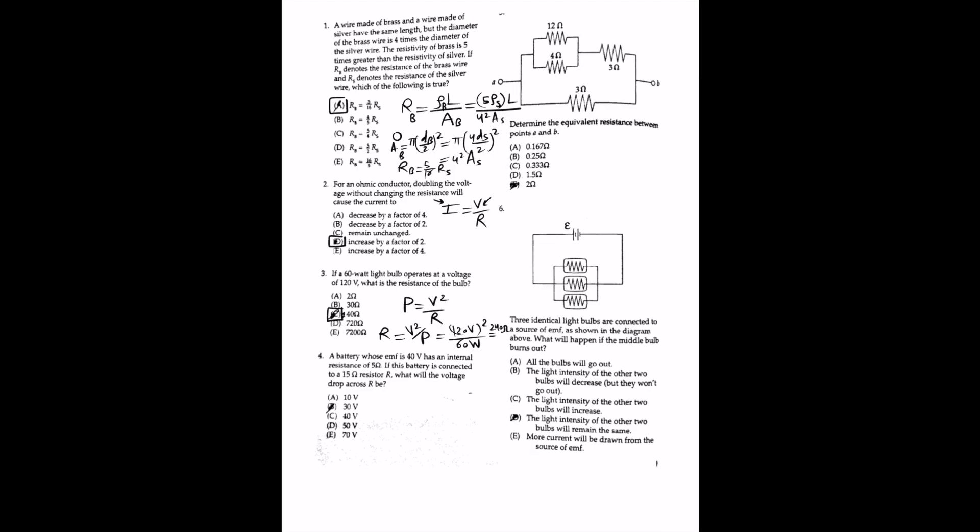For question 4, a battery with an electromotive force of 40 volts has an internal resistance of 5 ohms. Connected to a 15-ohm resistor, the current through the circuit equals the EMF over (r + R). The EMF is a potential difference provided by the battery that drives the flow of charge — not actually a force, but work done per unit charge, measured in volts. So I = 40V / (5Ω + 15Ω) = 2 amperes.